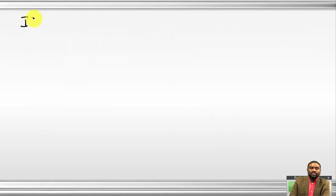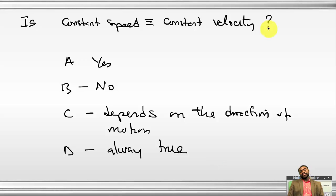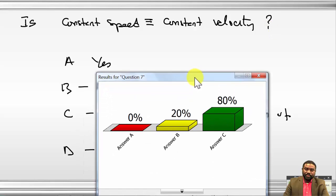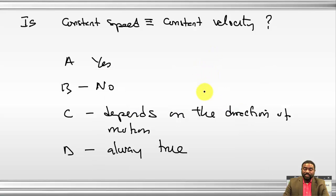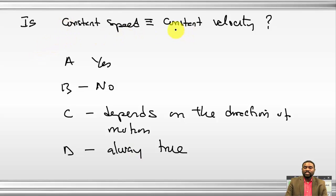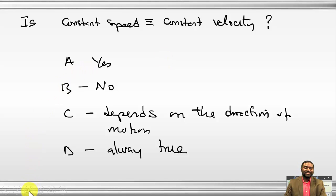The next question: is constant speed equivalent to constant velocity? 20% say no, 80% think the answer depends on direction of motion. Speed is a scalar quantity; velocity is a vector quantity. A scalar cannot be equivalent to a vector, so the answer is definitely no.